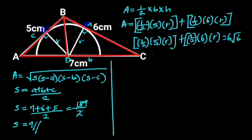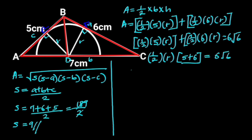Next, let's factor out ½ × R on the left side. Doing so gives us ½ × R × (5 plus 6) equals 6√6. Since 5 plus 6 is 11, we have ½ × R × 11 equals 6√6.